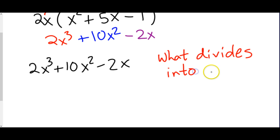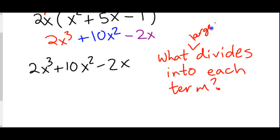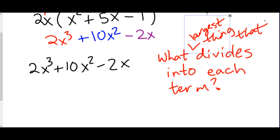We have to be even a little more specific — not just what divides, but what's the biggest thing that divides into each term? Because sometimes there are multiple things that would divide into each term. So looking at each number — 2, 10, and 2 — it helps to start with the smallest number, because if we have something bigger than 2, it's definitely not going to divide into 2.